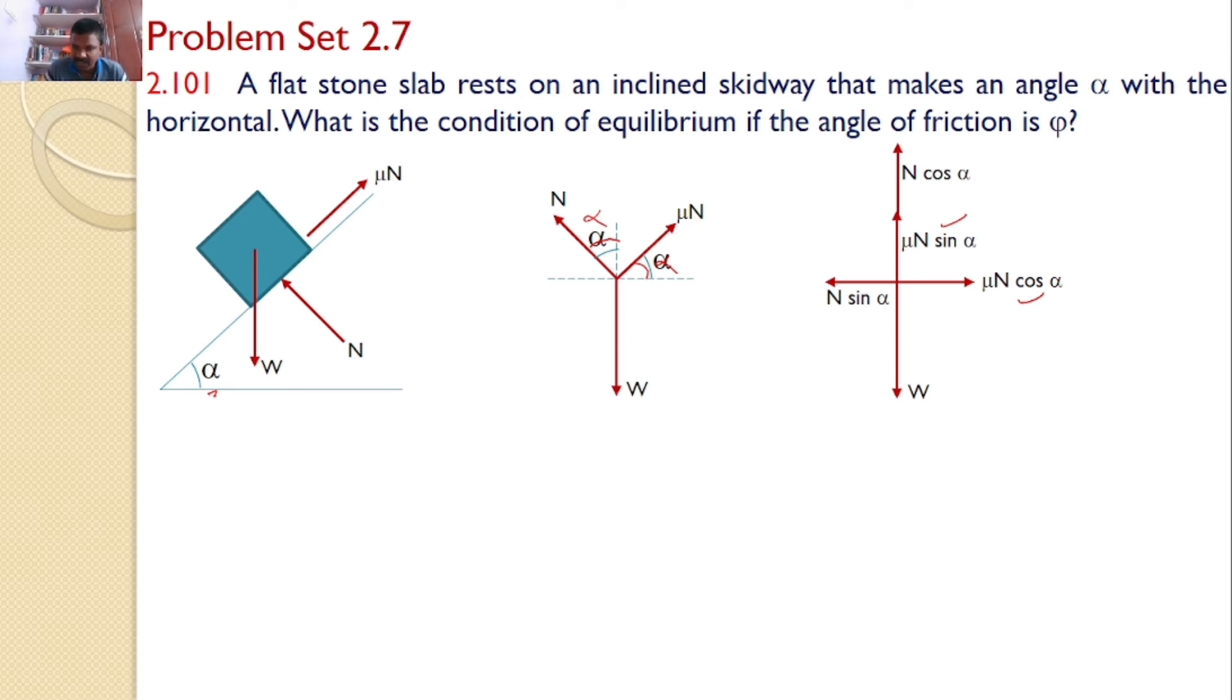Let us apply the equilibrium equations. Sigma Fx equals zero. There are only two forces. By applying the equilibrium equation, you will get N sin alpha equals mu N cos alpha. So N gets cancelled, and you will get tan alpha equals mu.